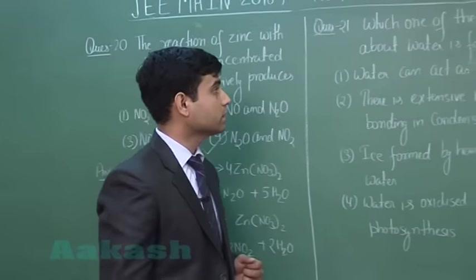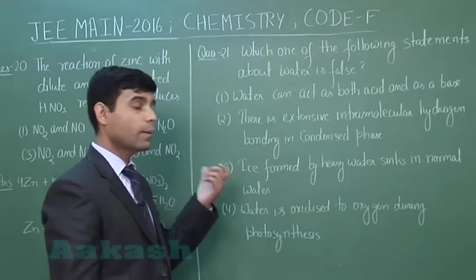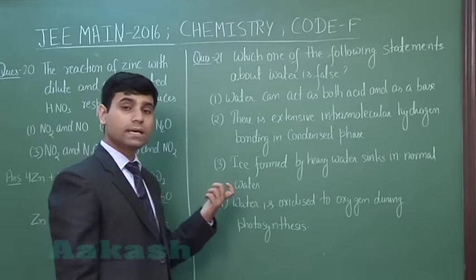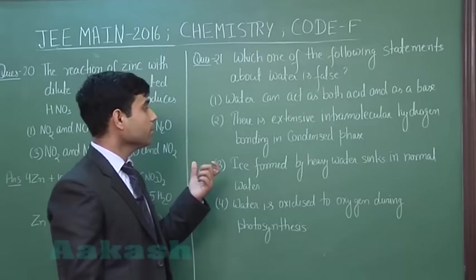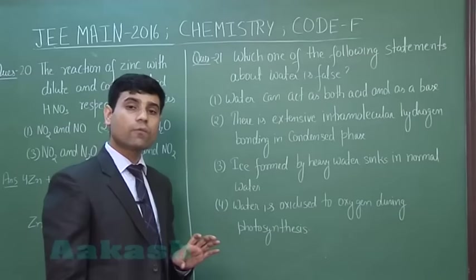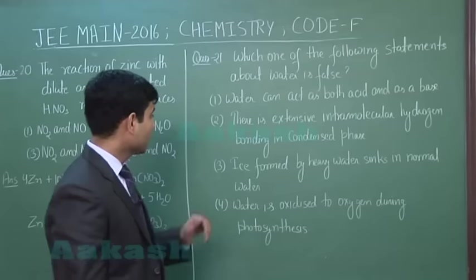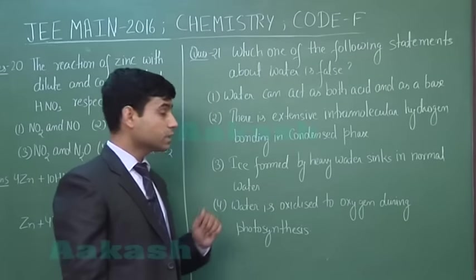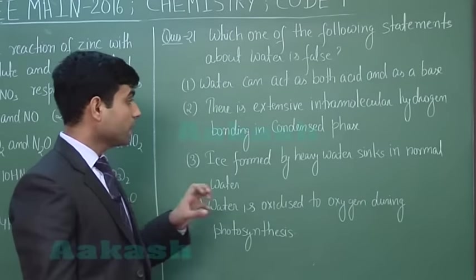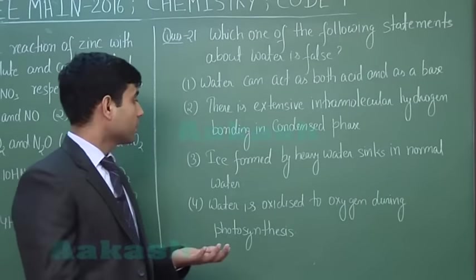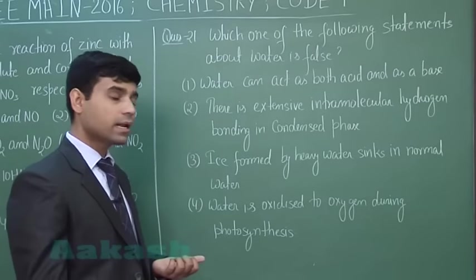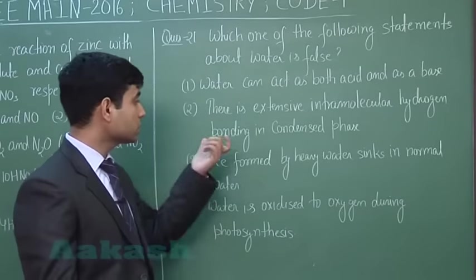The next question asks which statement about water is false. Statement 1 says water can act as both acid and base — this refers to the amphoteric nature of water, so it is true. Statement 2 says there is extensive intramolecular hydrogen bonding in the condensed phase — but hydrogen bonding in water is intermolecular, not intramolecular, so this statement is false.